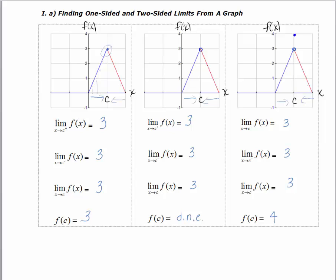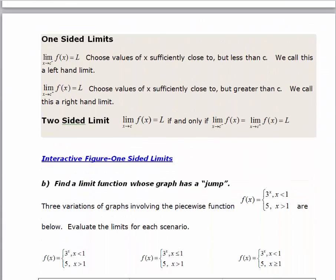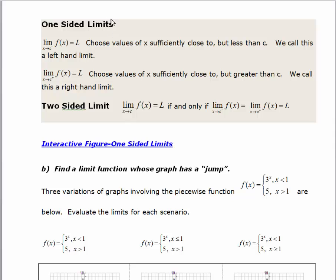So we have three different scenarios: one where the two-sided limit exists and equals the function value; the middle one where the two-sided limit exists even though the function value doesn't exist; and the third where the limit exists but the function value is different from the limit. To define one-sided limits formally: if the limit of f of x as x approaches c from the left — with a minus sign — equals L, that's called a left-hand limit. If the limit as x approaches c from the right — with a plus sign — equals L, that's a right-hand limit. If the left and right-hand limits are equal, then we have a two-sided limit.